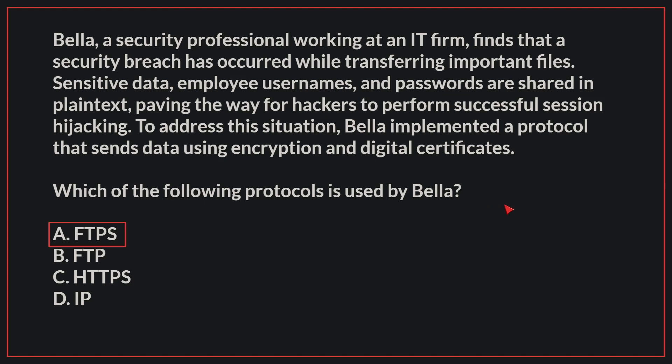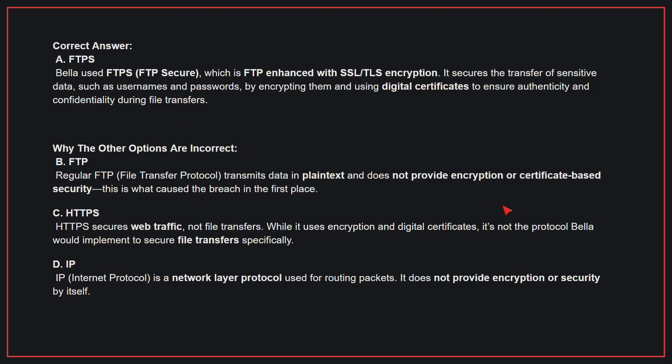The correct answer is A: FTPS. Bela used FTPS, which is FTP enhanced with SSL/TLS encryption. It secures the transfer of sensitive data, such as usernames and passwords, by encrypting them and using digital certificates to ensure authenticity and confidentiality during file transfers. Why the other options are incorrect? B: Regular FTP transmits data in plain text and does not provide encryption or certificate-based security — this is what caused the breach in the first place.